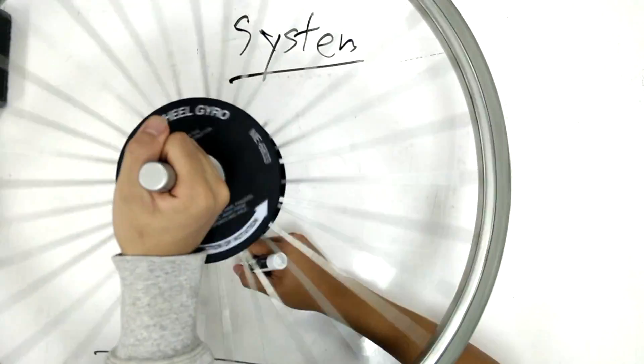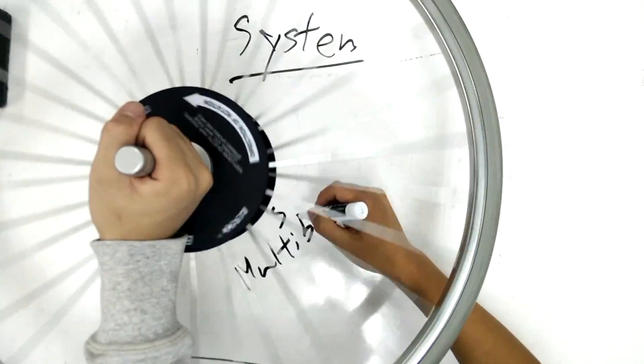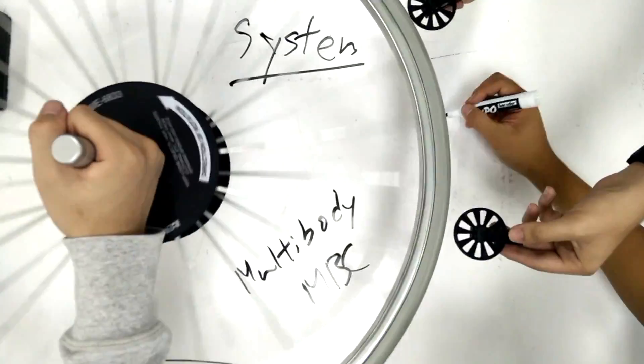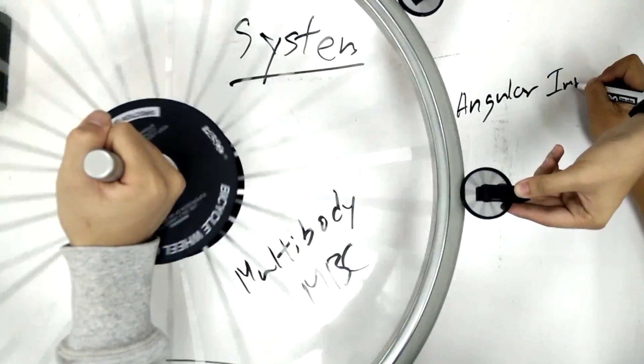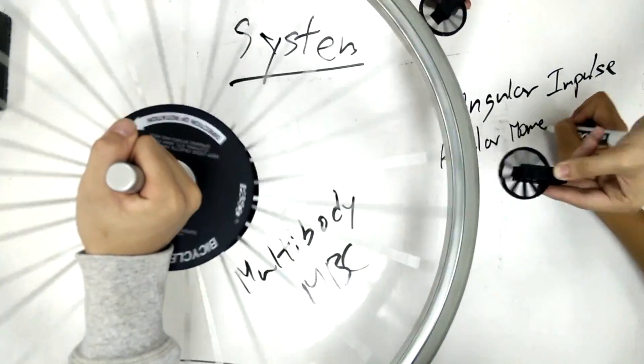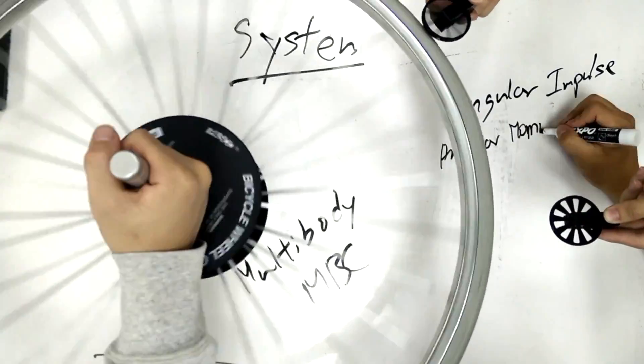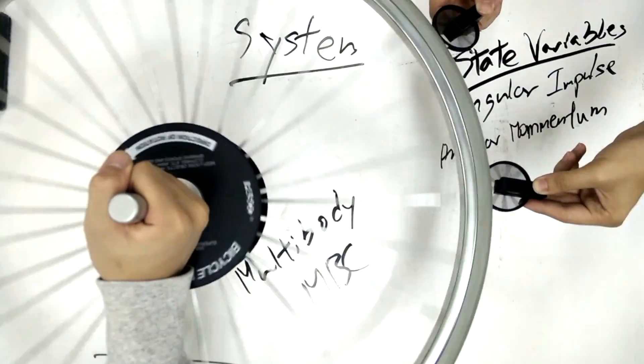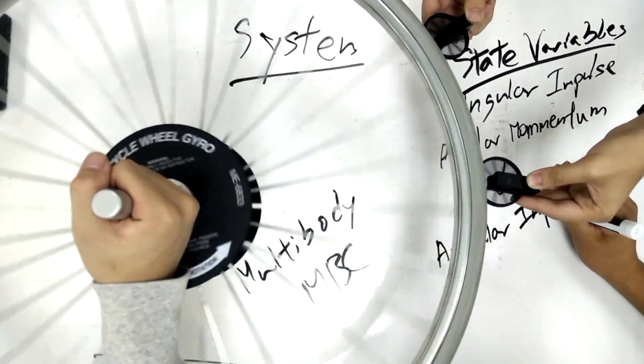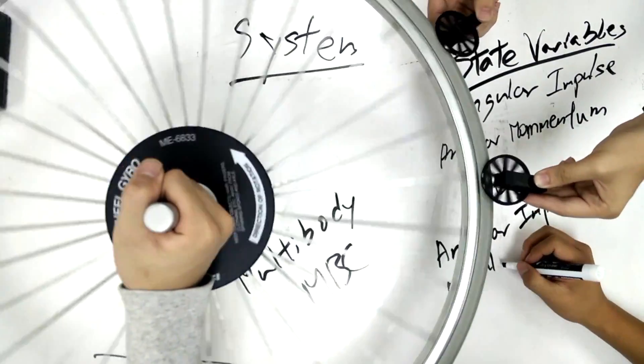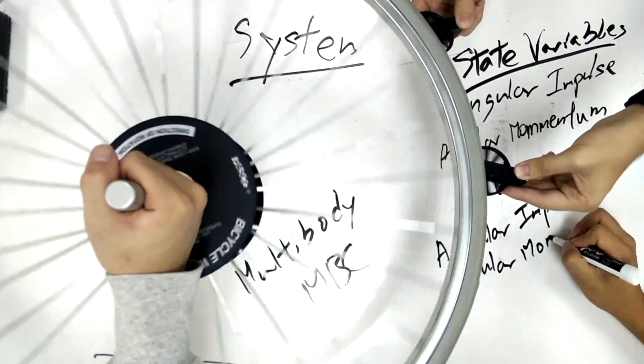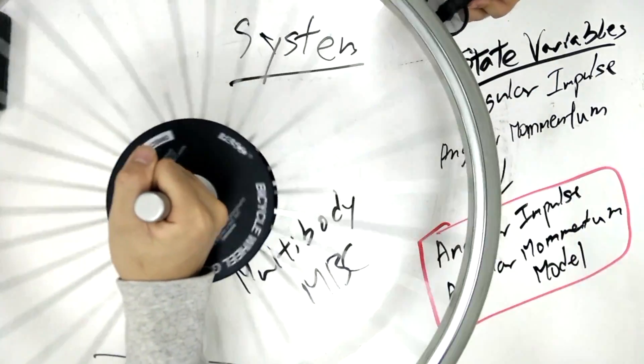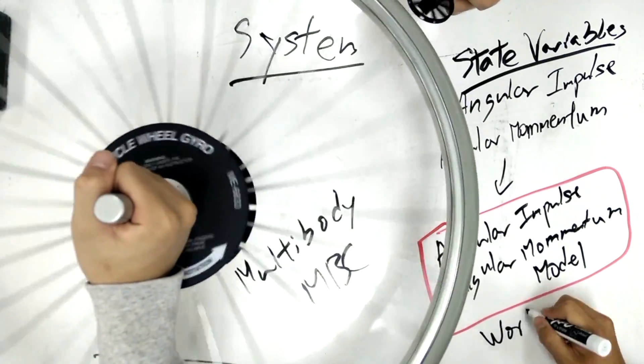We have multi-body systems applied to rotation as well. In a multi-body system, there is simply two or more objects interacting and rotating. The state variables here are angular impulse and angular momentum. We use the angular impulse and angular momentum model to describe these, as well as the work and mechanical energy model.